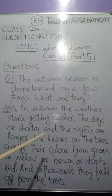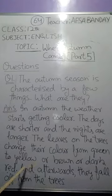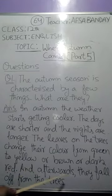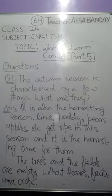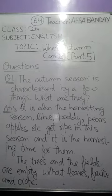The days are shorter compared to summer and the nights are longer. The leaves on the trees change their color from green to yellow, or sometimes brown, or in some trees dark red, and afterwards they fall off from the trees — that means the trees shed their leaves. In autumn it's also the harvesting season for paddy, maize, and fruits like pears and apples, which get ripe in this season.